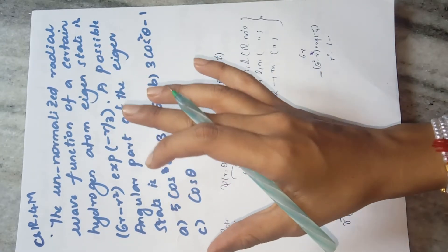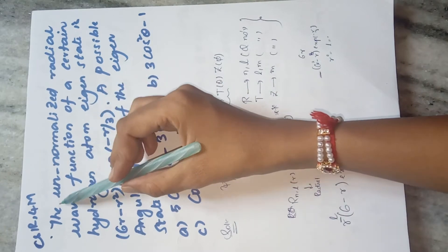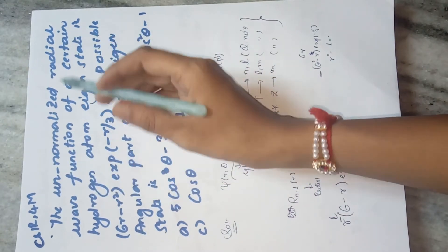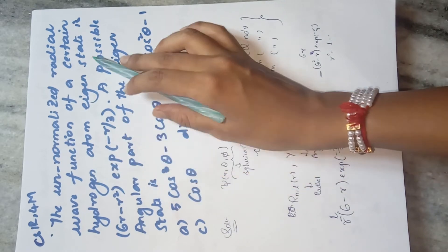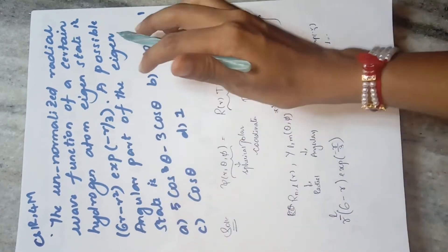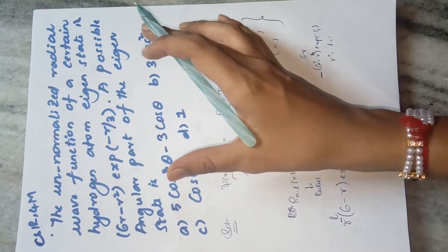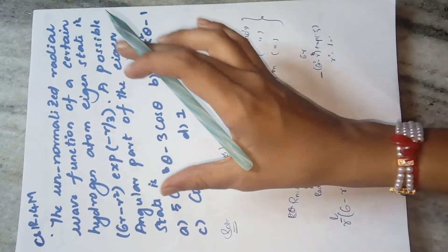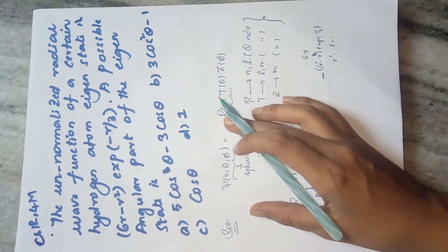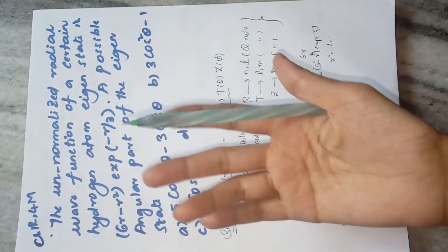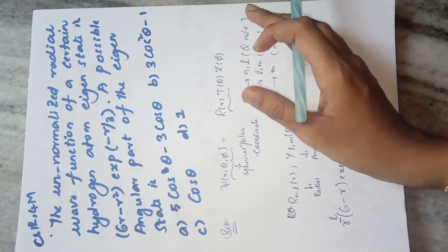First we'll discuss this particular question: the unnormalized radial wave function of a certain hydrogen atom eigenstate has been given, and a possible angular part of the eigenstate is what we are supposed to find. The angular part means something like sine θ cos θ — it is in terms of angle θ and φ.